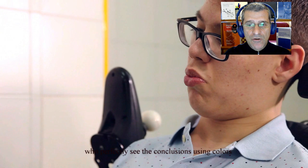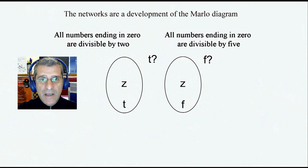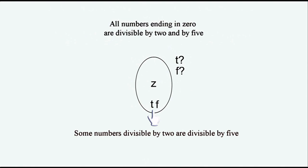The networks are the development of the Marlowe diagram in which conclusions are obtained by superimposing propositional models. Marlowe diagrams are easy and intuitive even for children.